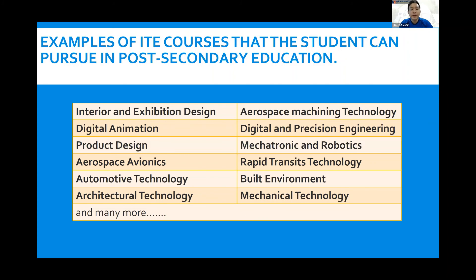For our N-level students, there are some courses that accept D&T as one of the required subjects. The table here shows courses where D&T students have an advantage over non-D&T students, such as interior and exhibition design, product design, mechatronics and robotics, digital and precision engineering, built environment, mechanical technology and many more. I look forward to seeing you in my class in 2022. Thank you for watching this presentation and have a great day ahead.